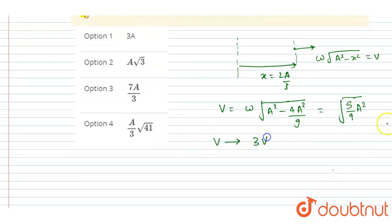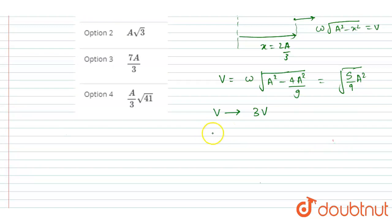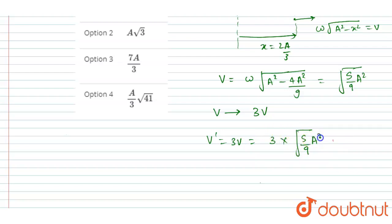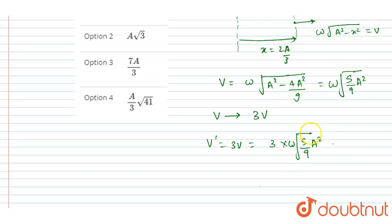So the velocity at a distance of 2A/3 is ω·A·√(5/9). This gets tripled, so the new velocity is 3v, which equals 3 times ω·√(5/9·A²), giving ωA√5. This will be the final velocity after tripling.